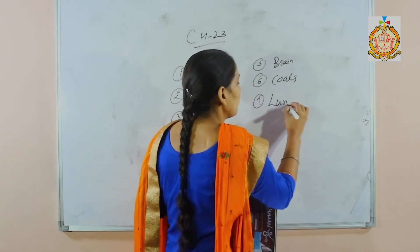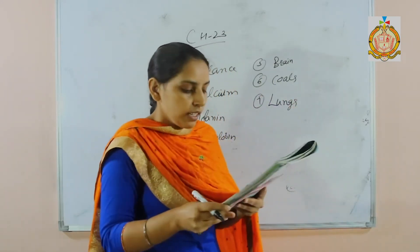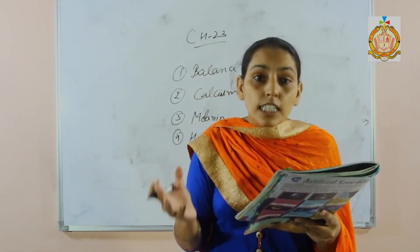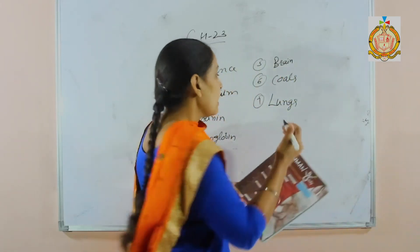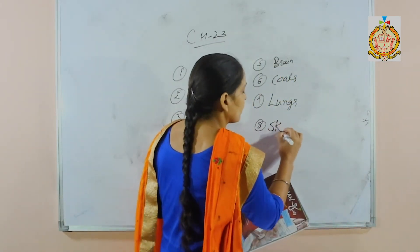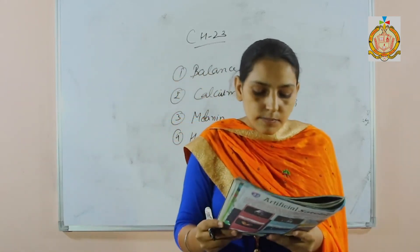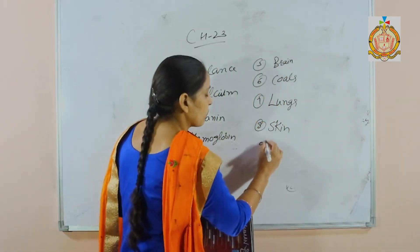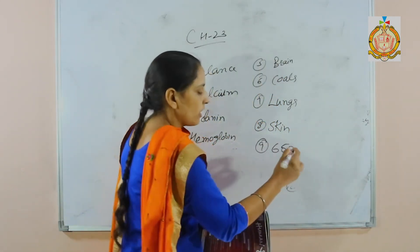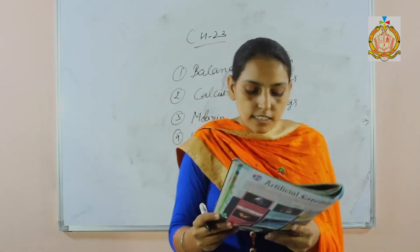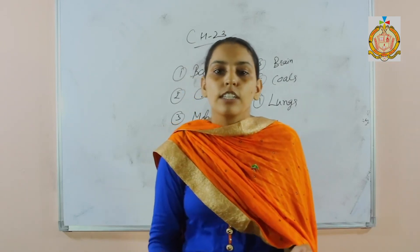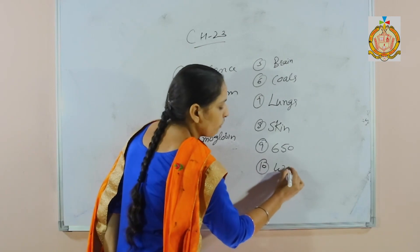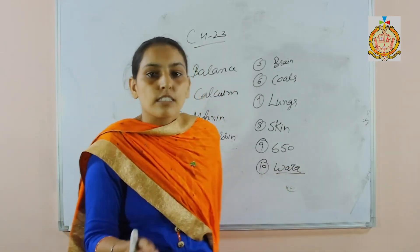Our skin protects our internal body parts. Next: how many muscles are in our body? There are 650 muscles present in our body. Last: about 60% of our body weight is due to the presence of water.